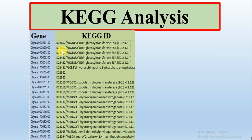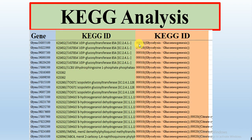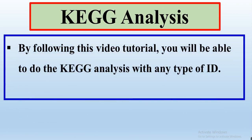Like here, this is our gene and there is the K ID — that K and there is a number — this is the K ID. But in this video, we will try to do the KEGG analysis with Pathway ID, or an ID like a Pathway, Metabolic Pathway, or similar. By following this tutorial, you will be able to do the KEGG analysis with any type of ID — either a KEGG Pathway ID, a Metabolic Pathway ID, or any type of ID related to the KEGG analysis — so you will be able to do the KEGG analysis of your protein family.